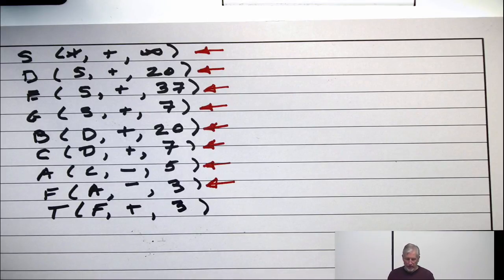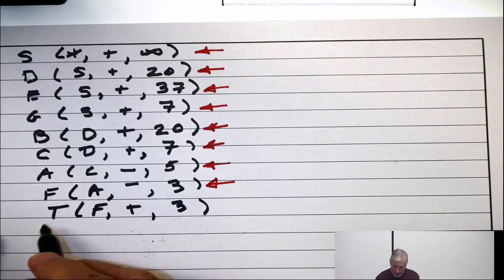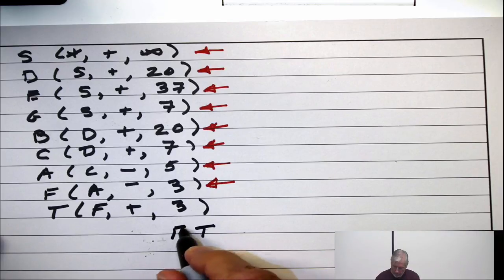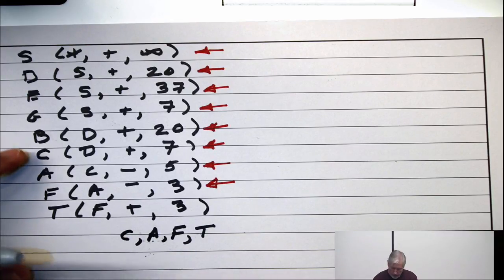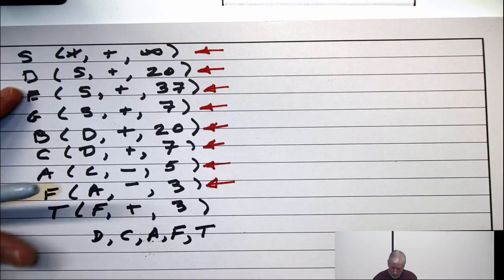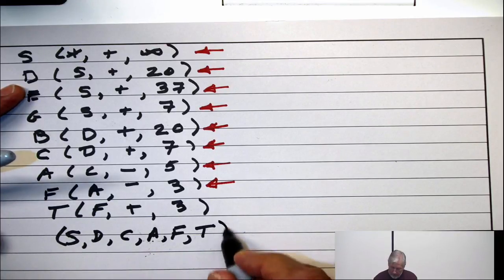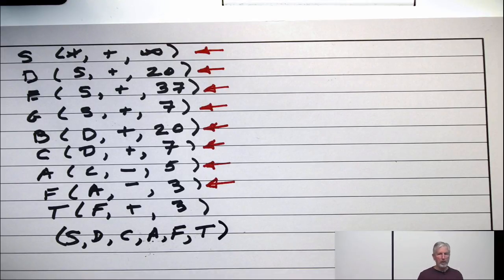All right. So now I have my augmenting path, which I get from backtracking. T got its label from F. F got its label from A. A got its label from C. C got its label from D. D got its label from S. So that's the augmenting path. And if I was paying a little bit more attention as I was doing that, I could have recovered which edges in that path are forward and which edges are backwards. I make changes on those edges only. I go plus three on the forward edges and minus three on the backwards edges. And the value of the flow will increase from its current value. And its current value is 20 plus 40 plus 12. That's 60. It's 72. And it'll go up to 75.